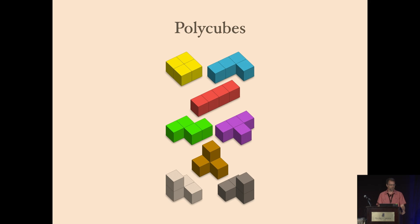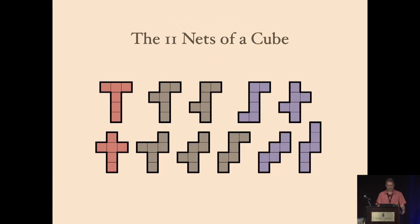One fun thing you can do with 3D objects, if you consider the surface, is you can unfold them. So in particular for polycubes, what we're interested in is cutting along the edges some way to unfold a flat net of squares in the plane. It's well known that there's 11 nets of the cube up to symmetry. These are those. Depending on how you cut the edges, these are the distinct unfoldings that you get.